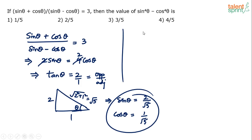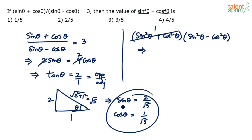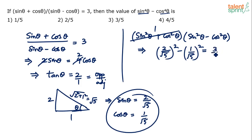sin⁴θ - cos⁴θ can be factored as (sin²θ + cos²θ)(sin²θ - cos²θ). Since sin²θ + cos²θ = 1, this simplifies to sin²θ - cos²θ. So we get (2/√5)² - (1/√5)² = 4/5 - 1/5 = 3/5.